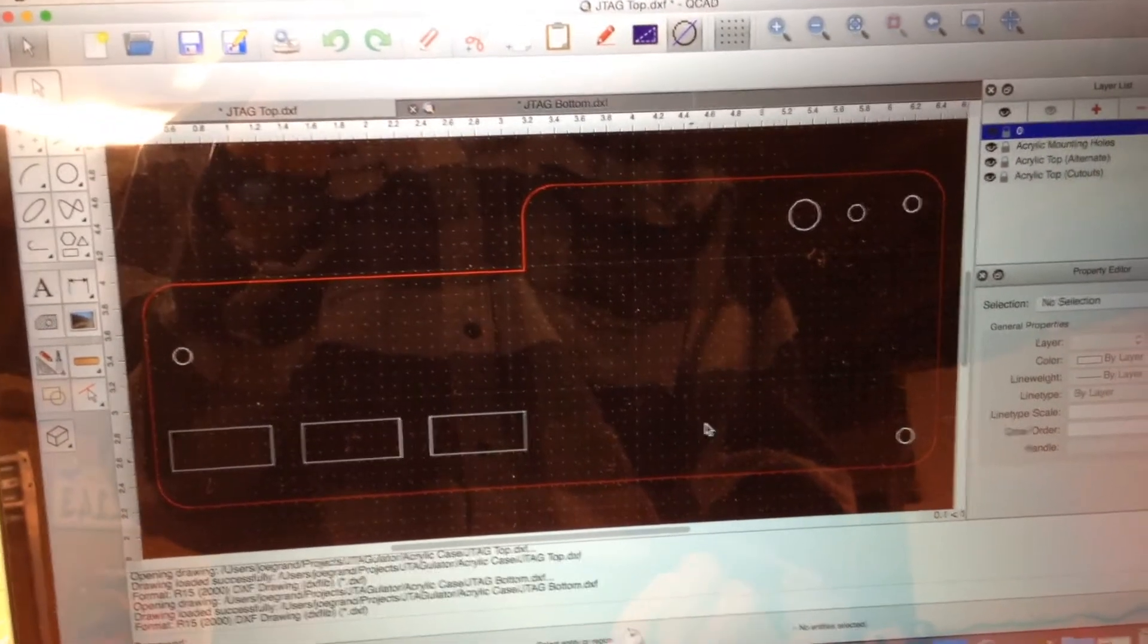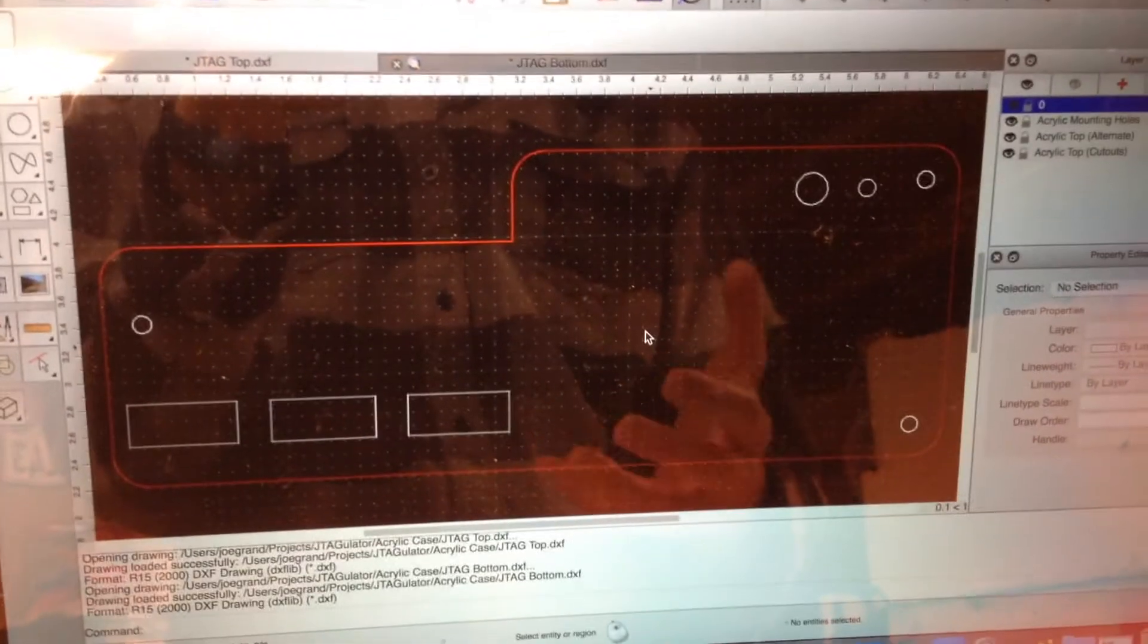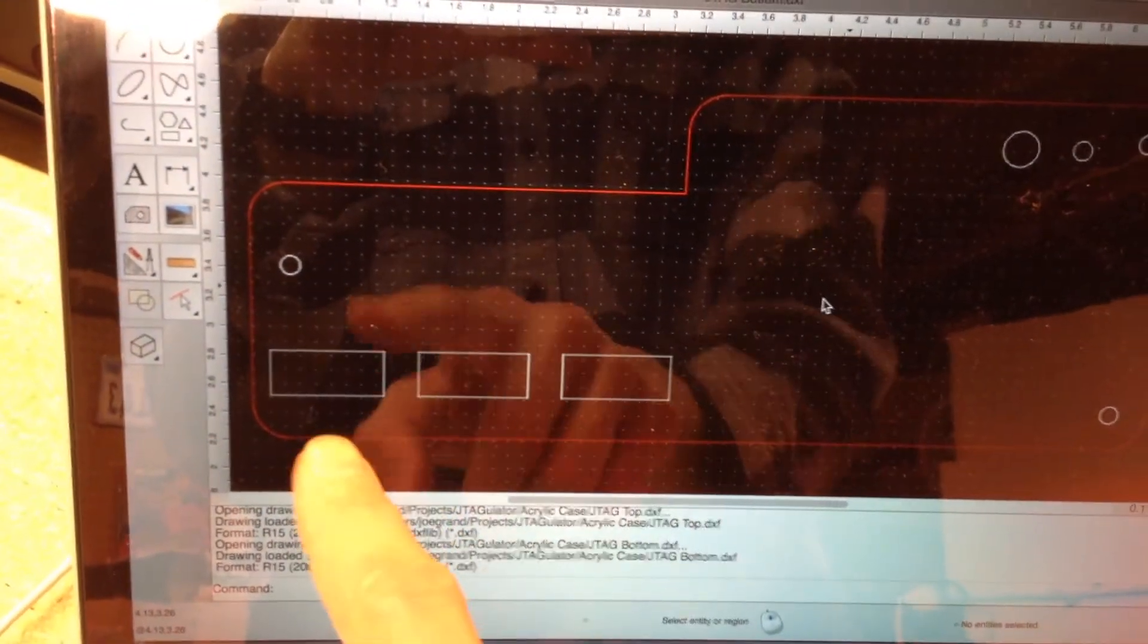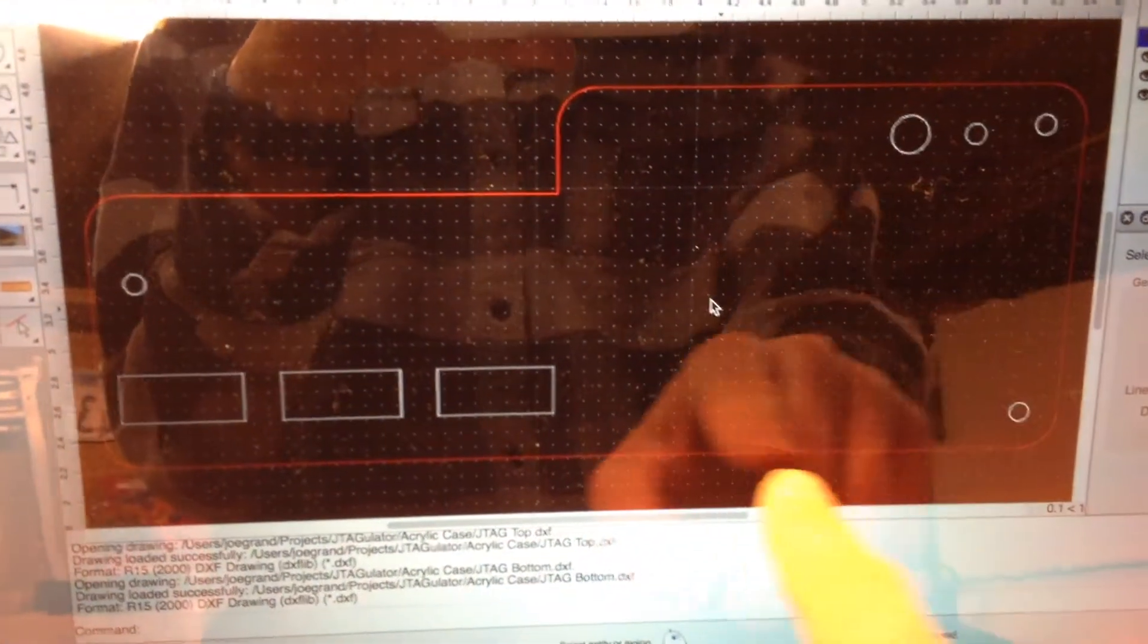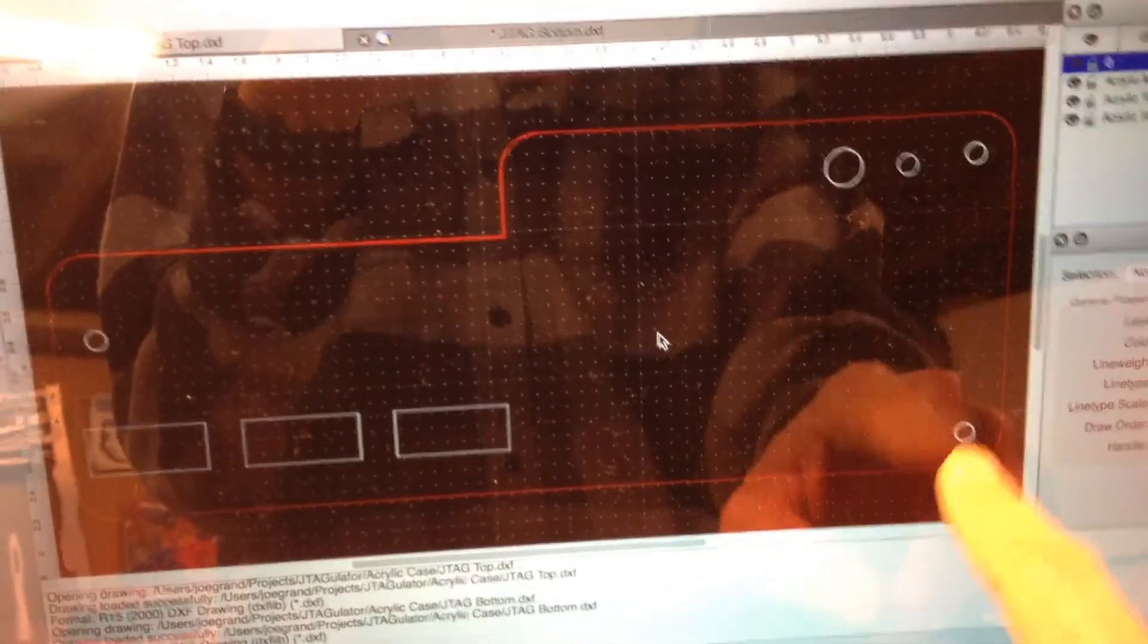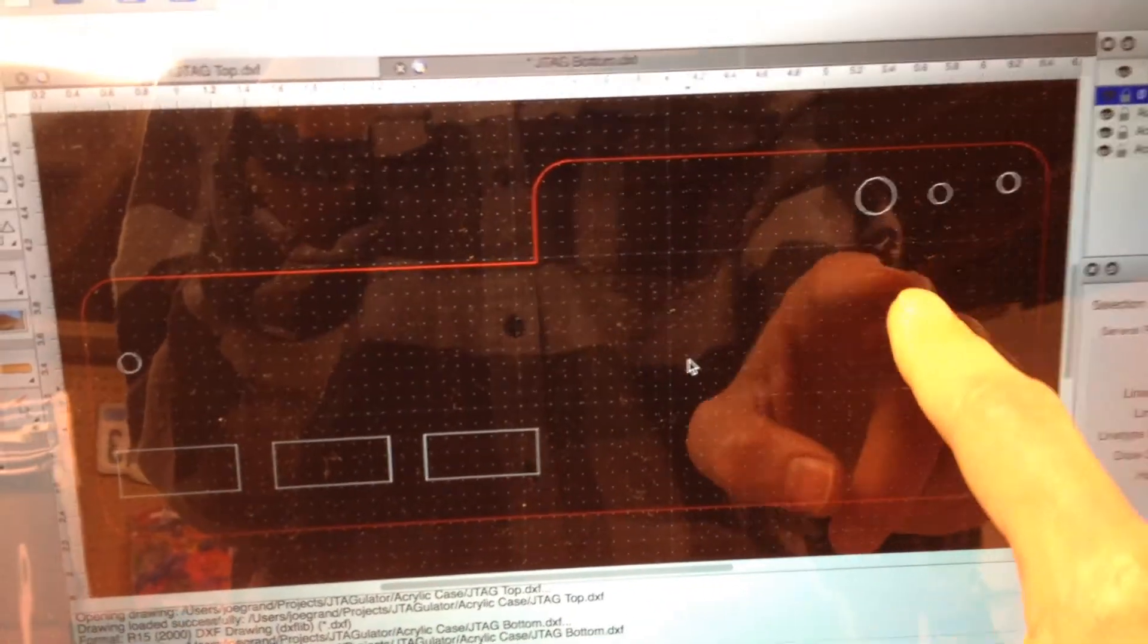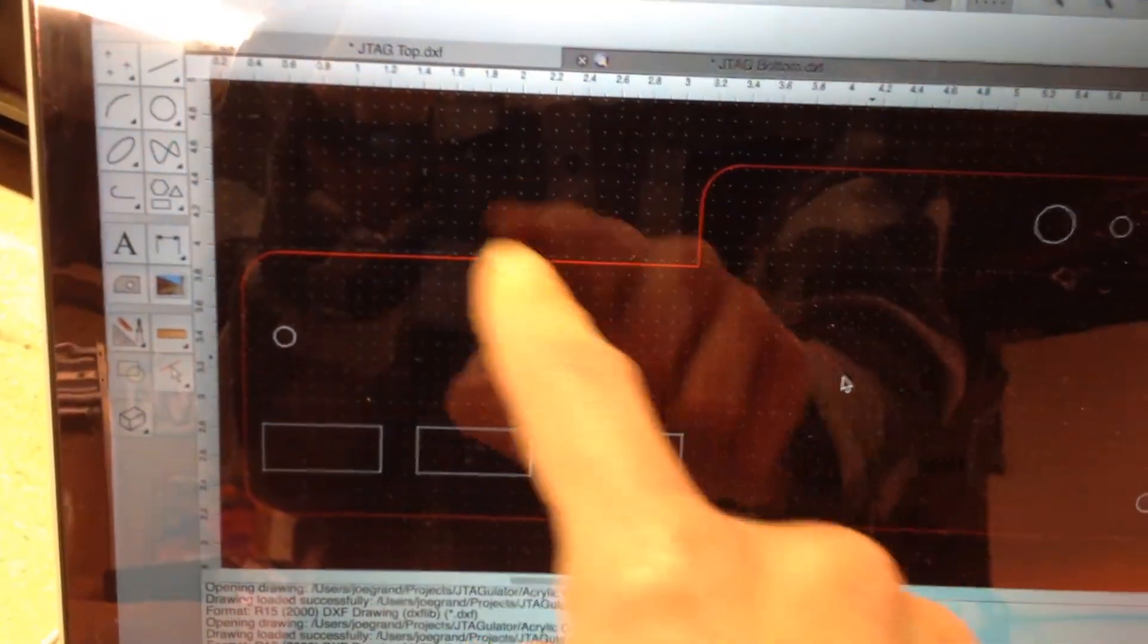To help me get the dimensions exactly right, I exported from Altium Designer, which is the circuit board design tool that I use. The board outline and also the silkscreen for the various parts. That way I could combine them together and now I have an actual outline. I know exactly where the terminal headers are, where the mounting holes are, where the reset button is, where the LED is, and then I have this cutout here for the actual screw terminal blocks.